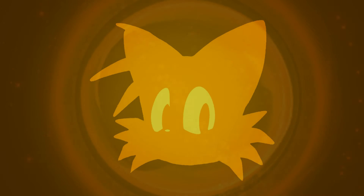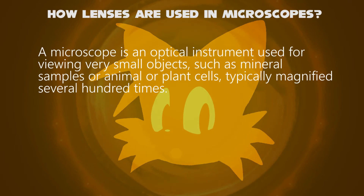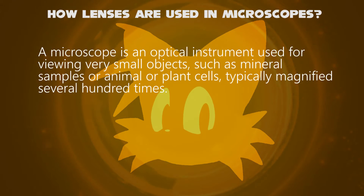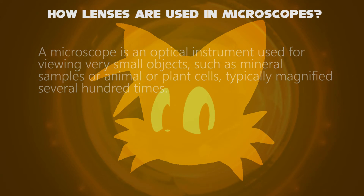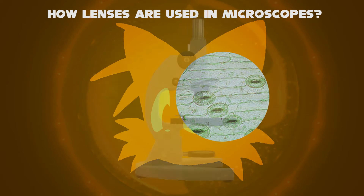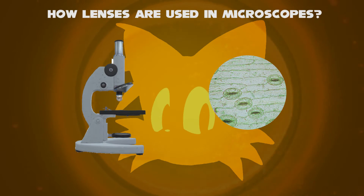A microscope is an optical instrument used for viewing very small objects, such as mineral samples or animal or plant cells, typically magnified several hundred times. Microscopes are widely used in laboratories for cell biology, taught by Blaze the Cat.